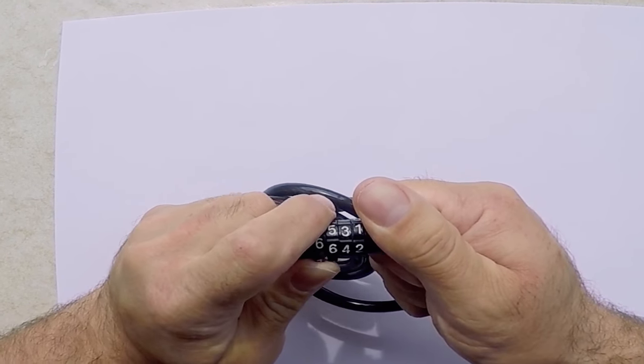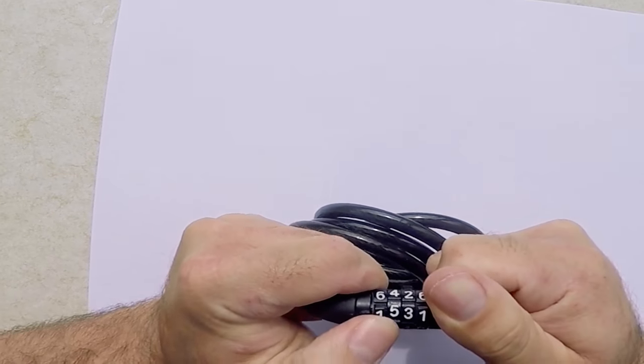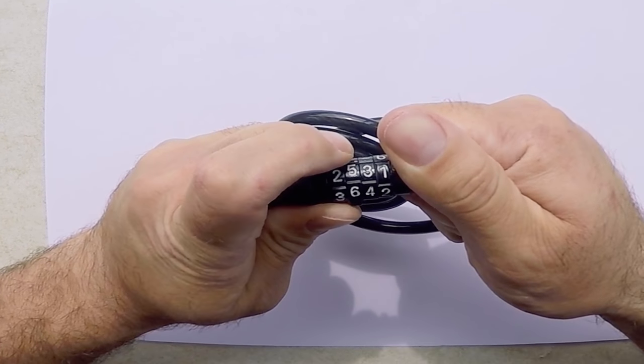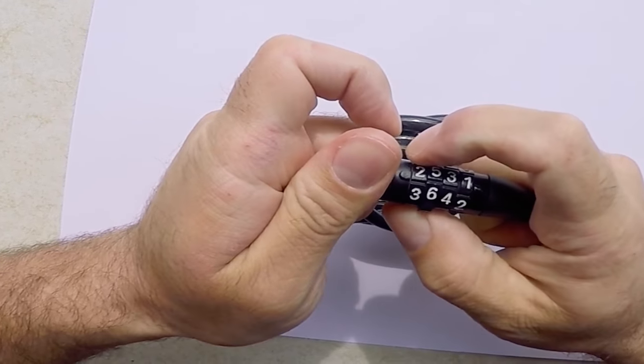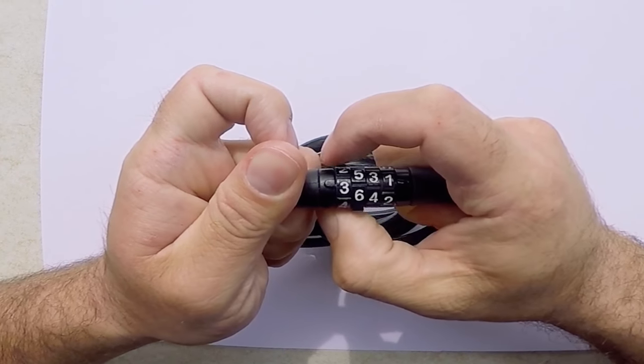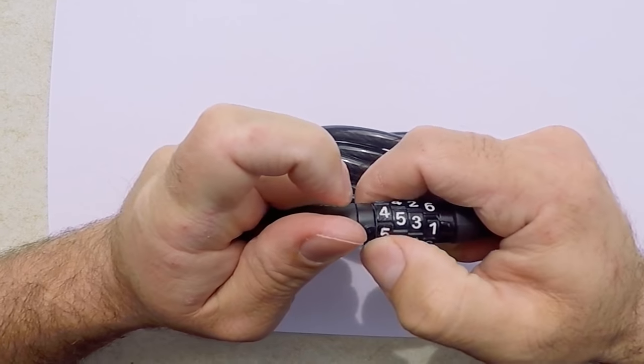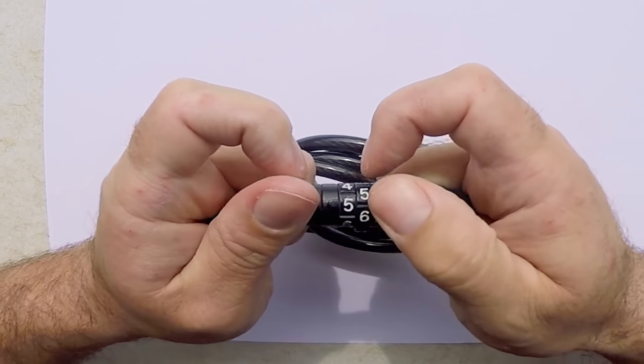While doing this, rotate the numbers on the dial as shown in the video. When the correct number is hit, the wedge will fall into the hole that is for the number. There is also a noticeable difference in the number rotation.